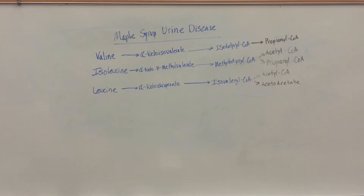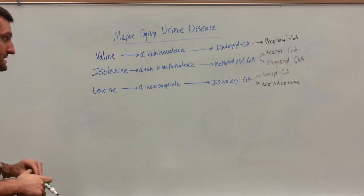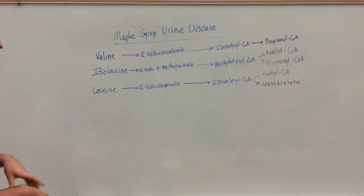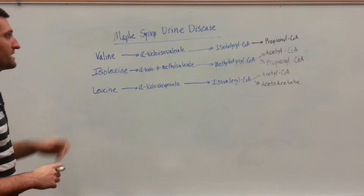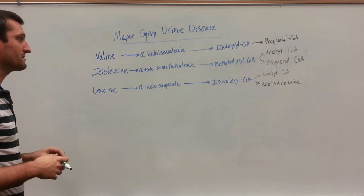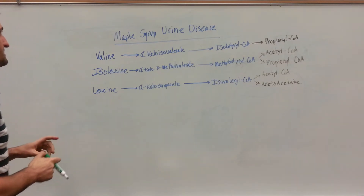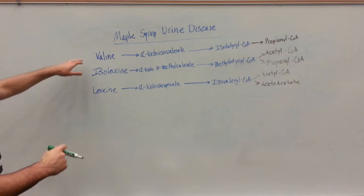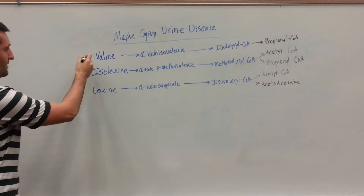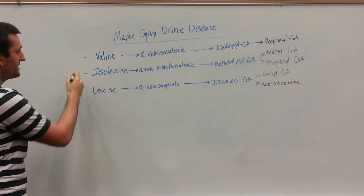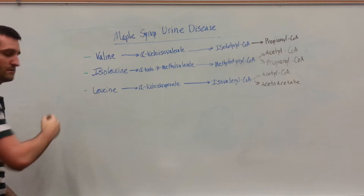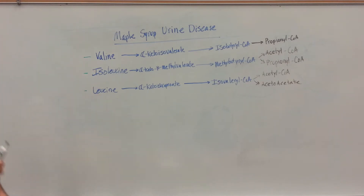I'm going to quickly talk about maple syrup urine disease. This has an interesting biochemical correlation. So we've got three amino acids: valine, isoleucine, and leucine.